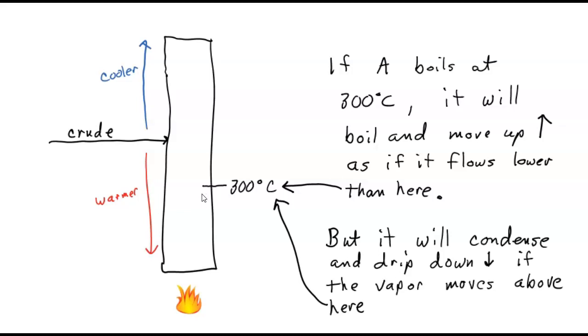Oh, we get to here and it's too hot and it's going to boil again. And it'll go up. And too cold, it's going to form liquid and it'll fall down. And it's just going to hang right around here where the A is. If it goes up, it turns into liquid and falls down. If it falls down, it gets too hot. And then it turns back into gas and it goes up. So all the A is going to be around here.